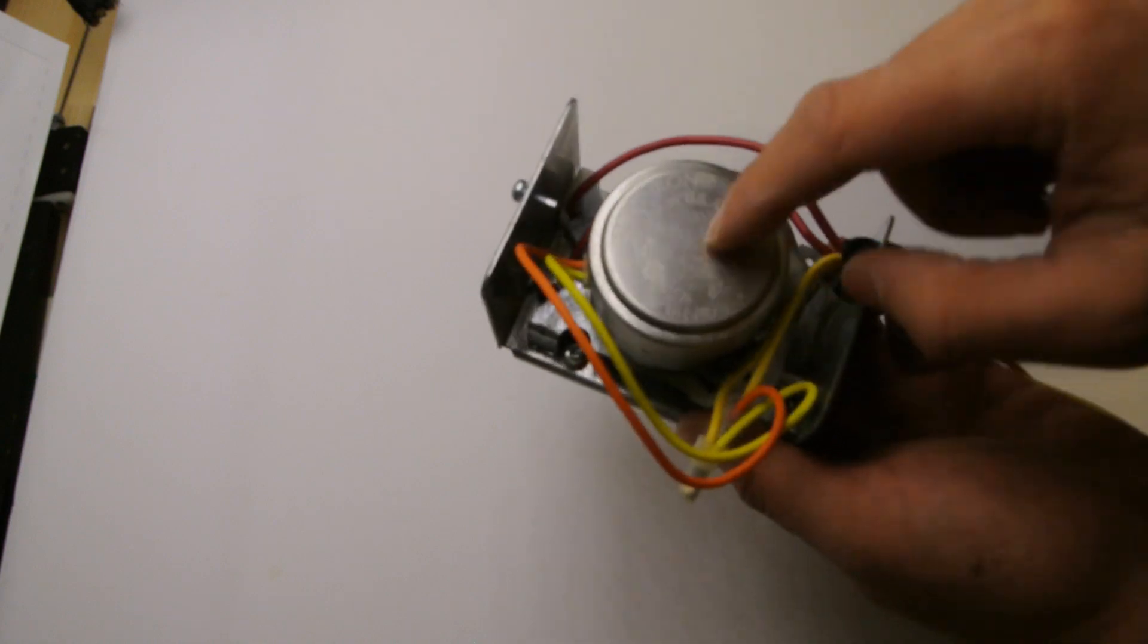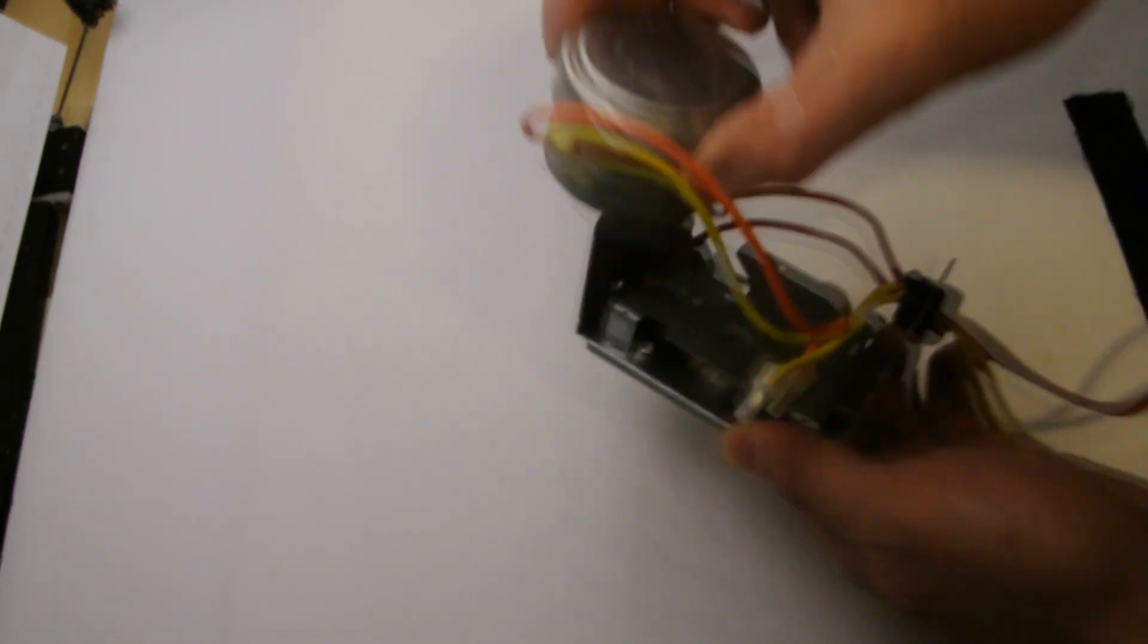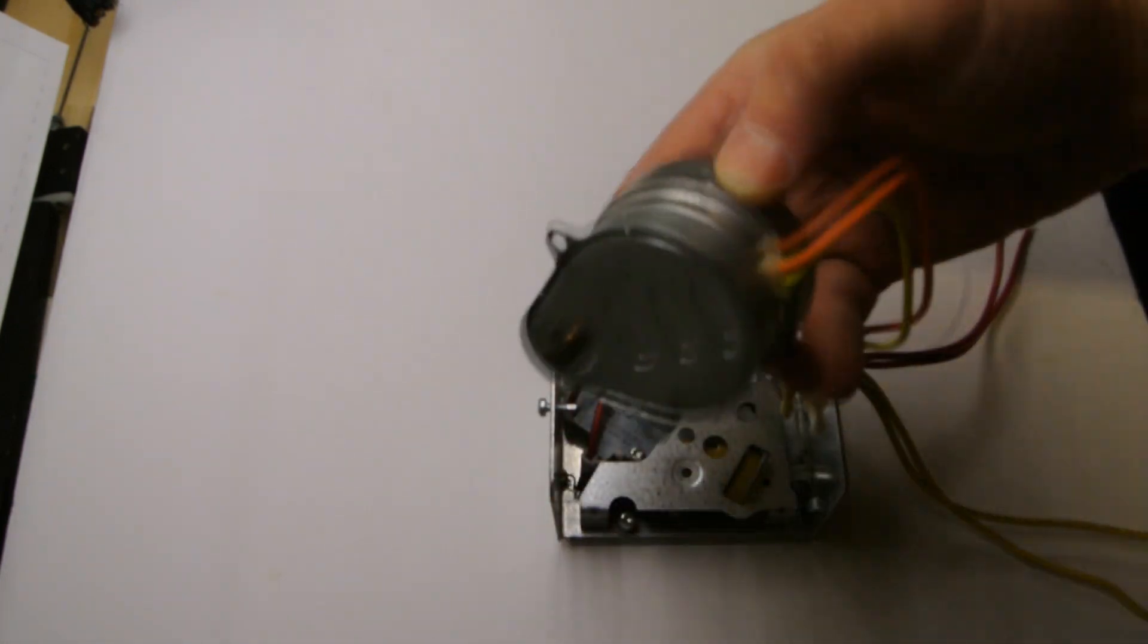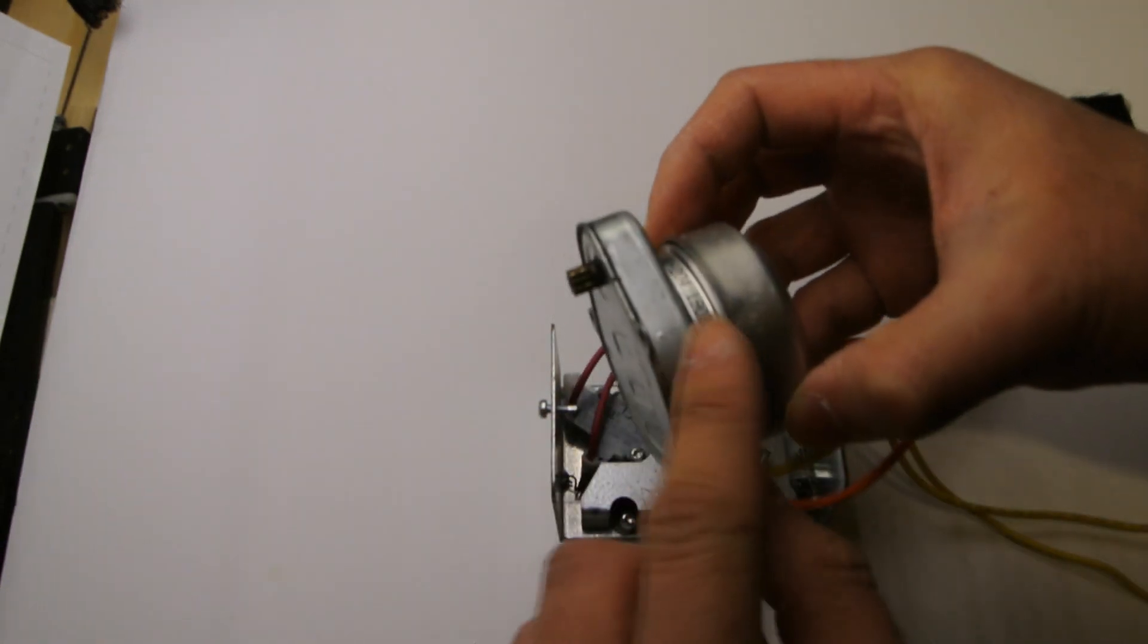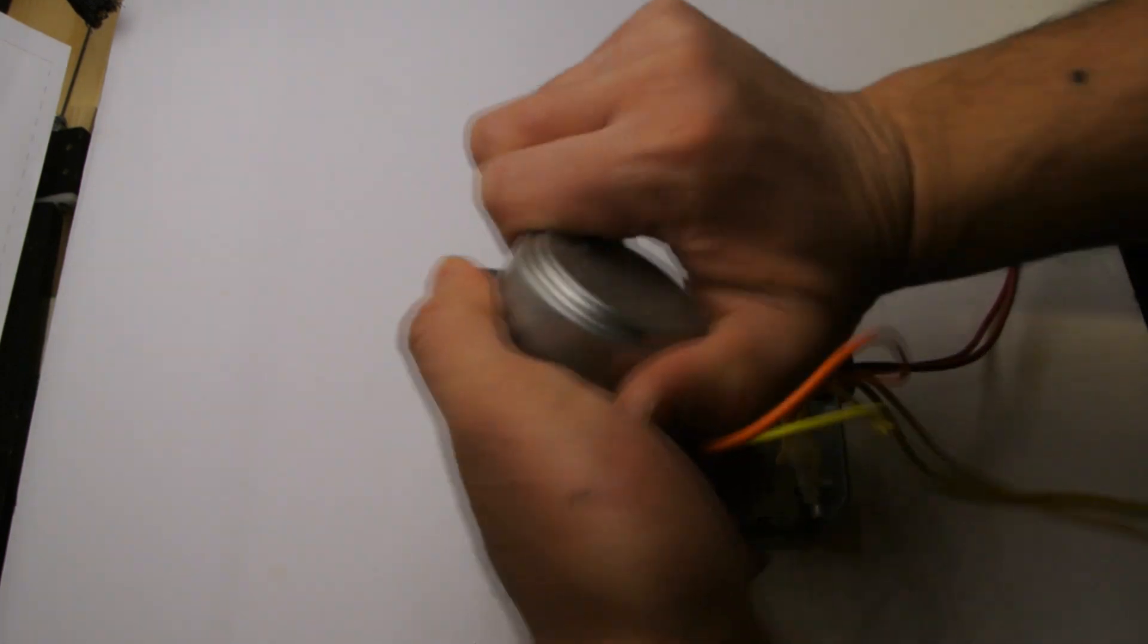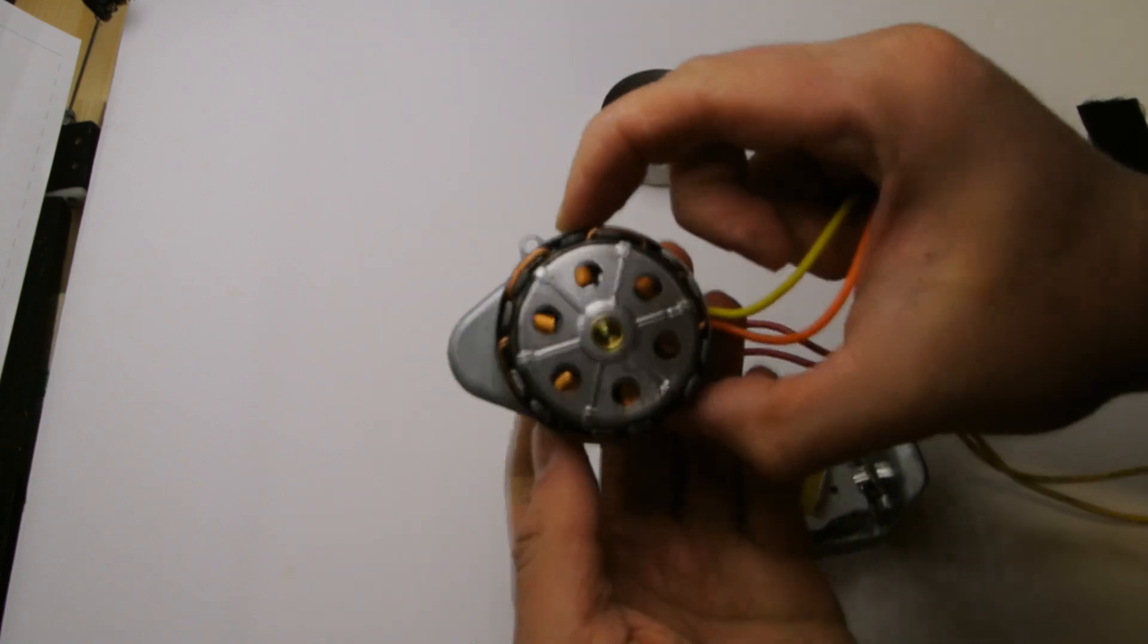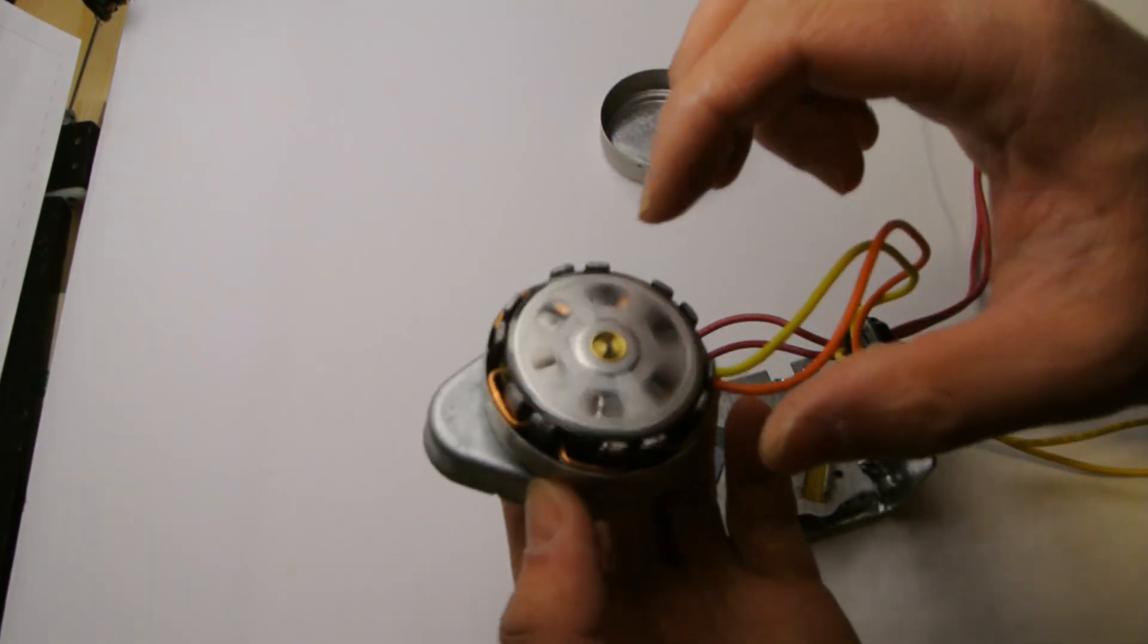This is the power head, as they call it, and you can see there's gears on it so it multiplies force. This spins on the inside. Let's see if I can just take this off. There we go. You can see, I think it's a brushless motor.